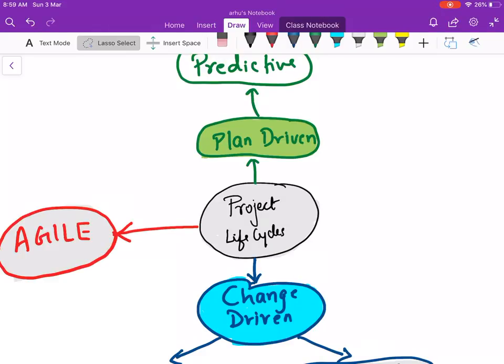The project life cycle is divided into three parts: one is the plan driven, the next one is the change driven, and third one is called Agile.